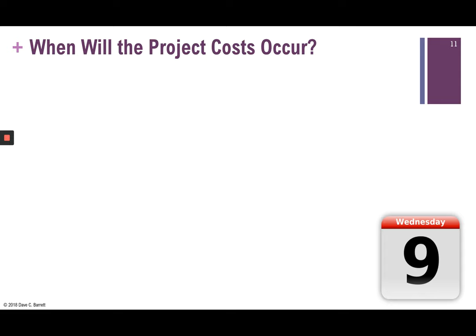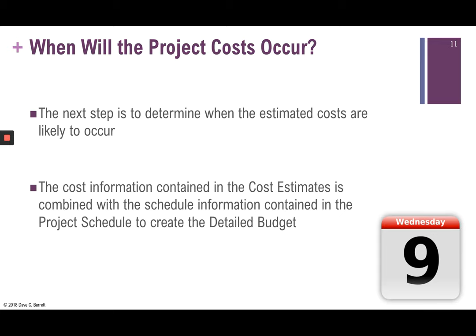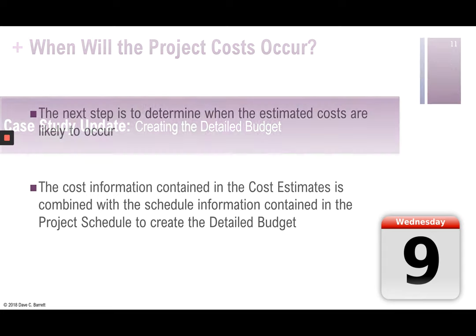Now on to step two: when will the project costs occur? We know we're on track to spend around $56,000, but when are those costs likely to occur? The cost information from the cost estimates is combined with the project schedule information. In order to create the detailed budget, you need the schedule in pretty good shape to determine when the project costs will occur.